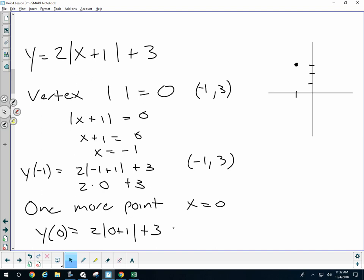I get 2 plus 3, which is 5, which means I have the point 0, 5. Since I know I have the point 0, 5, I know I have the point negative 2, 5. So boom, boom, boom, we're done.